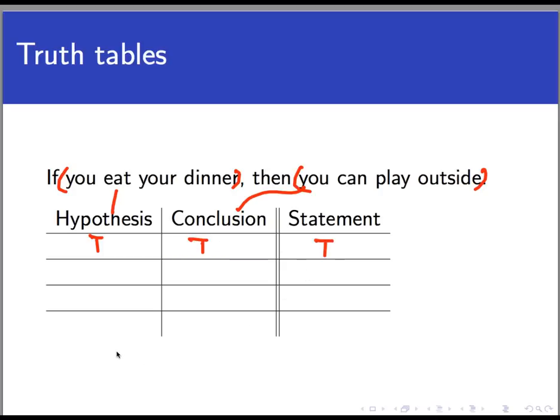Another situation is when the hypothesis is met, like the kids eat dinner, but the conclusion does not happen. The kids are not allowed to play outside. So I put a T here in the hypothesis column and an F here in the conclusion column because the hypothesis was met, but the conclusion didn't follow. And in this situation, we've seen that the conditional statement is false. So I'm going to put an F in the final column.